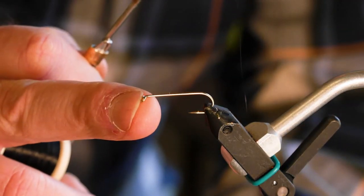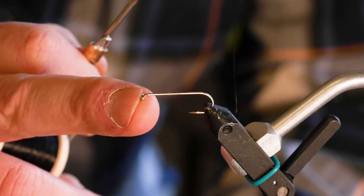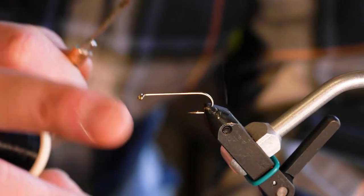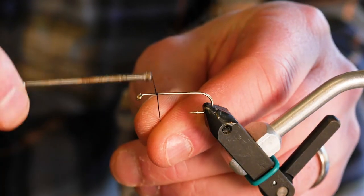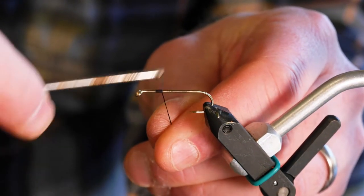You want to start with a 3XL. This is a 3X long nymph hook size 6. You want that because it's strong. Carp are strong fish. This is a big heavy fly. It'll hold them.